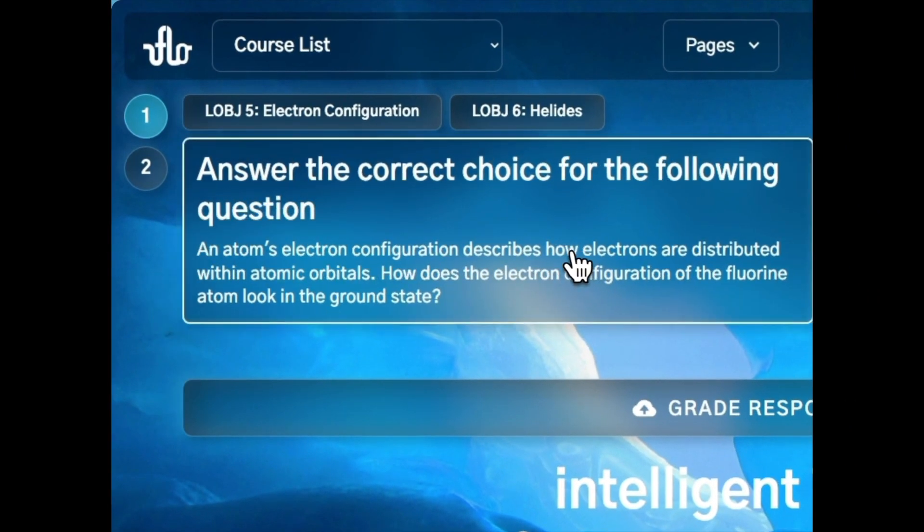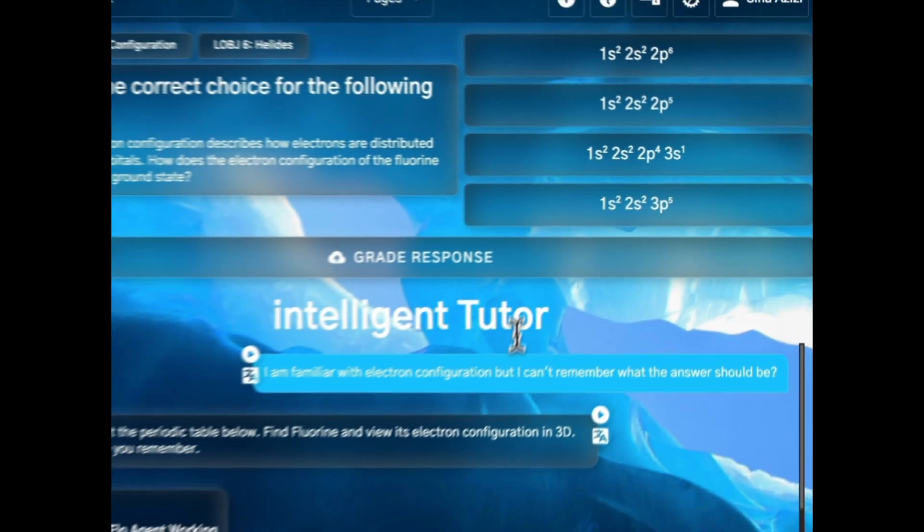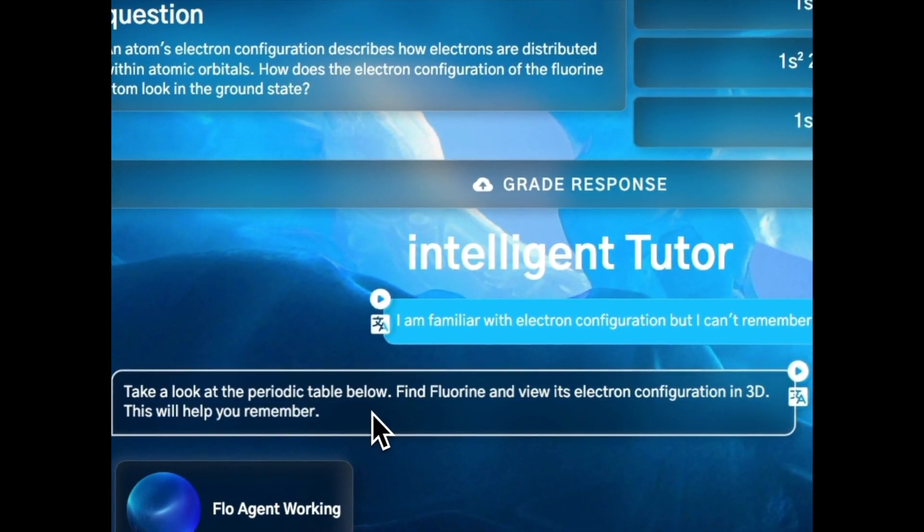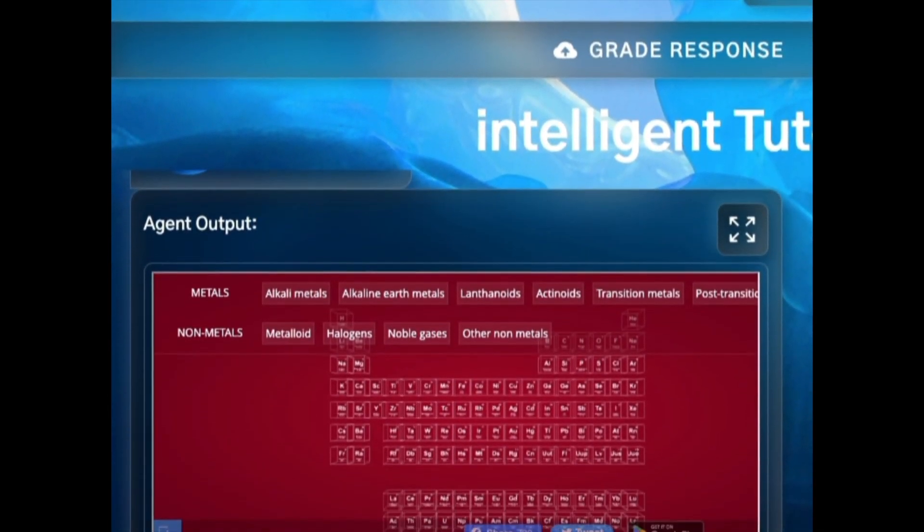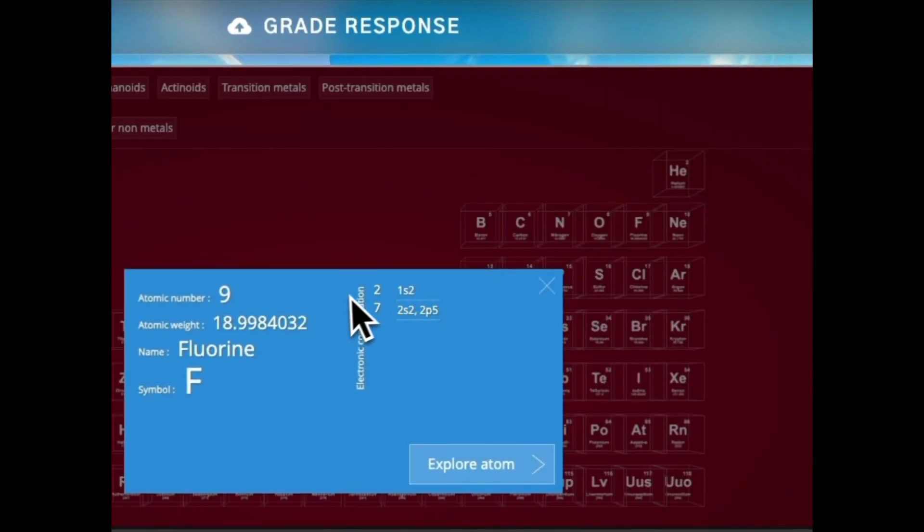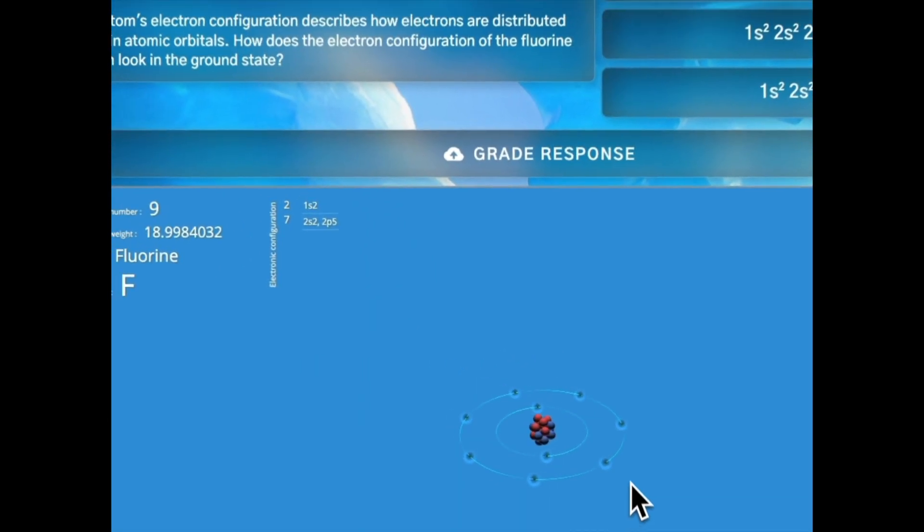When unsure about a question regarding chemical structure, learners can use Socratic chat to receive hints. A flow agent may then direct them to review the periodic table and examine a 3D visualization of an atom.